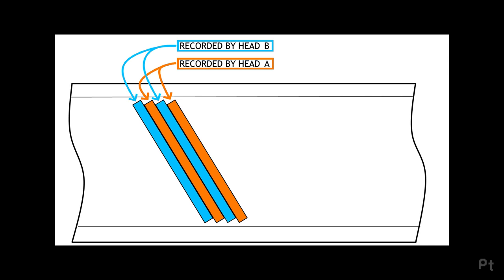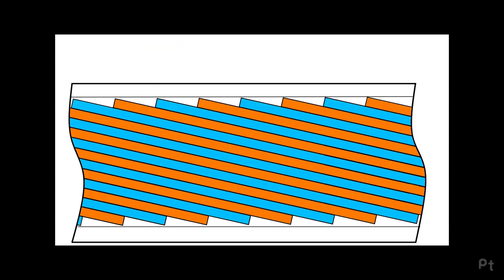The angle of the video tracks versus the tape itself is called the helix angle. The helix angle shown here is completely wrong — it's just for demonstration purposes. The helix angle is also affected by the tape speed itself, so as you slow down or speed up the tape with different play and record speeds, or using special effects like fast forward, rewind, scan, or even pause, you change the angle. Just keep that in mind.